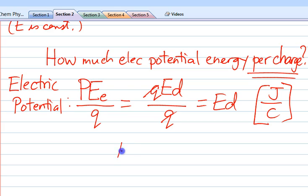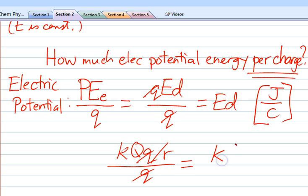I can also do the long version, K big Q little q over R, divide by little q. And that's K big Q over R, again, joules per coulomb.